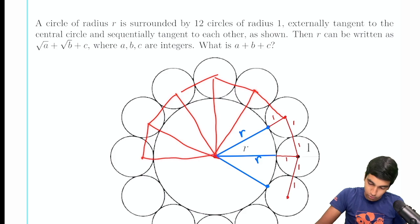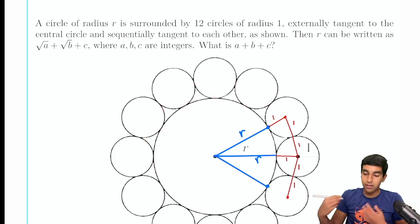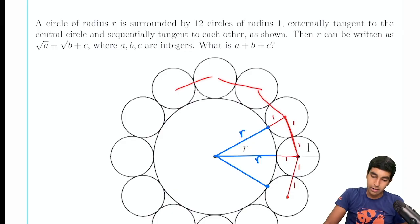12 triangles forms a 12-sided polygon. And I'm not going to draw the rest, but it's going to form a 12-sided polygon. Imagine all of these sides to form a 12-sided polygon.